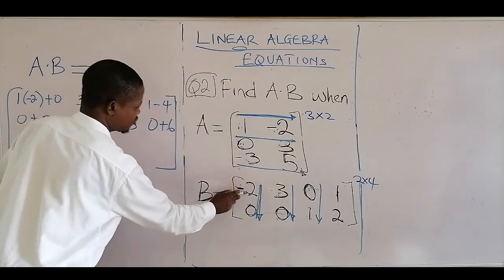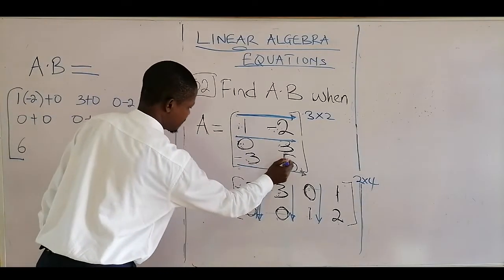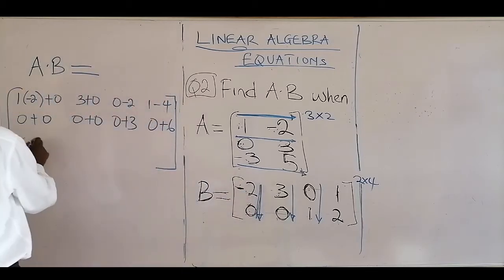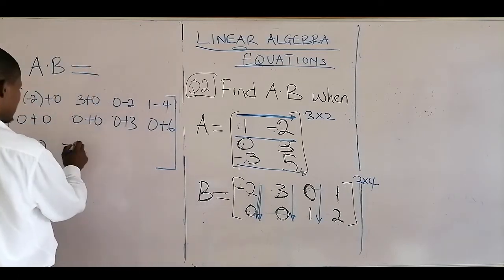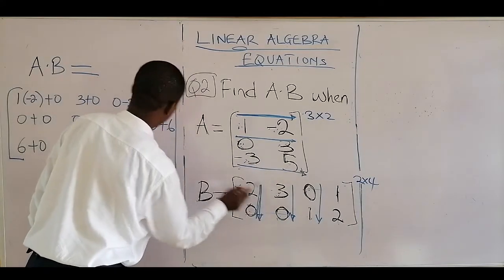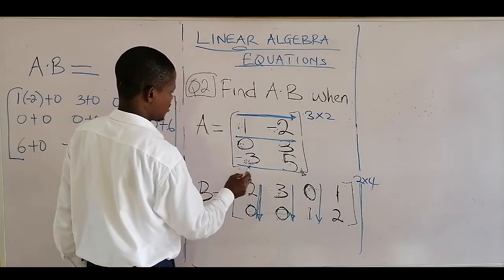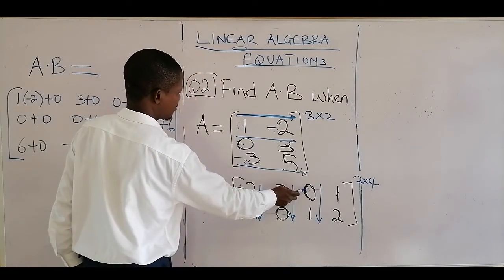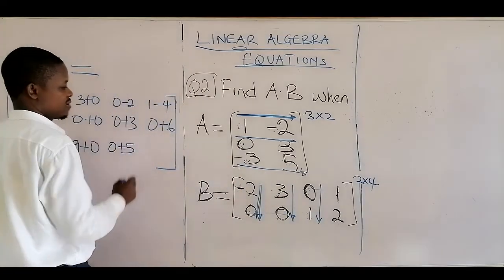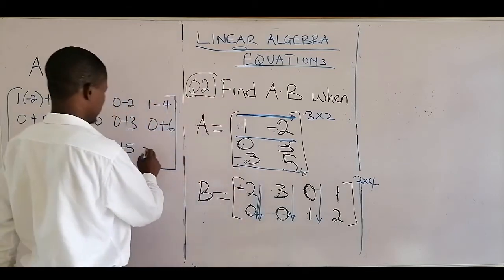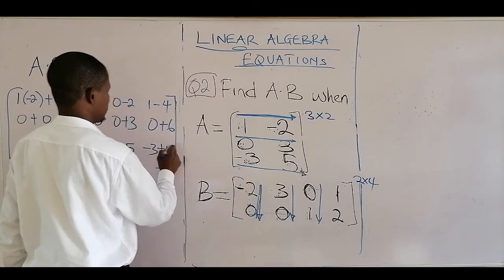For the third row: minus 3 times minus 2 is 6, and 5 times 0 is plus 0. Then minus 3 times 3 is minus 9, and 5 times 0 is plus 0. Next, minus 3 times 0 is 0, and 5 times 1 is plus 5. Finally, minus 3 times 1 is minus 3, and 5 times 2 is plus 10.